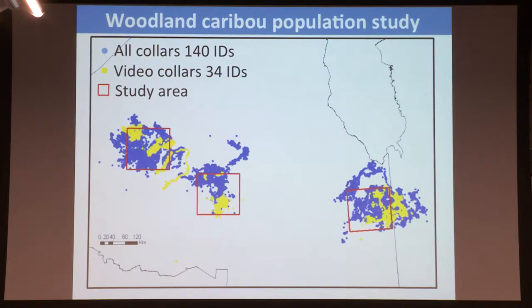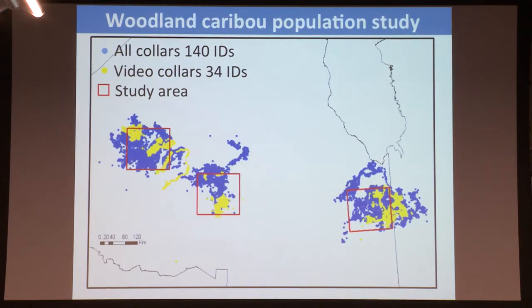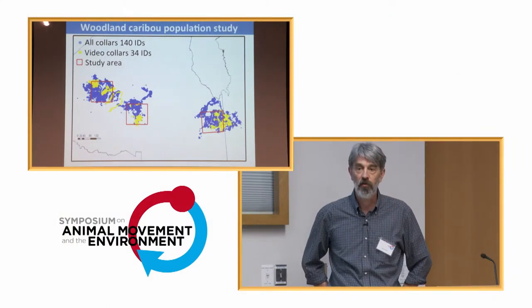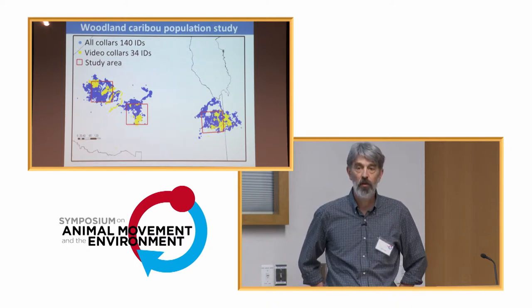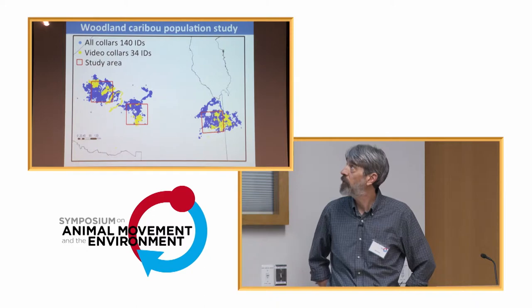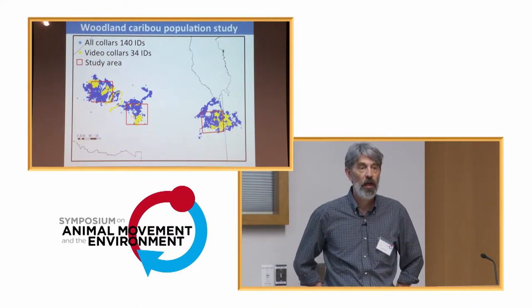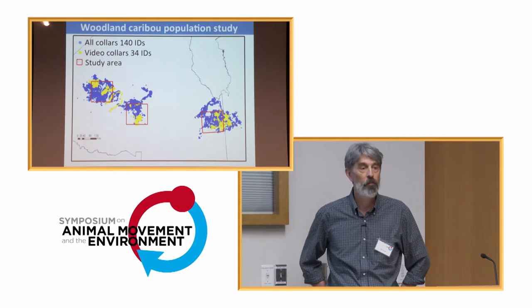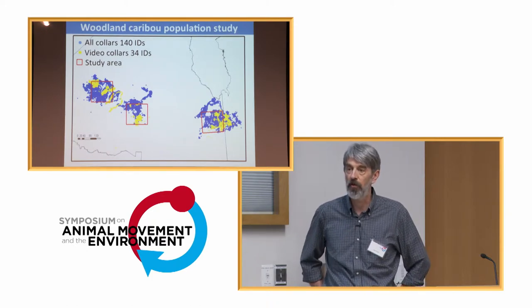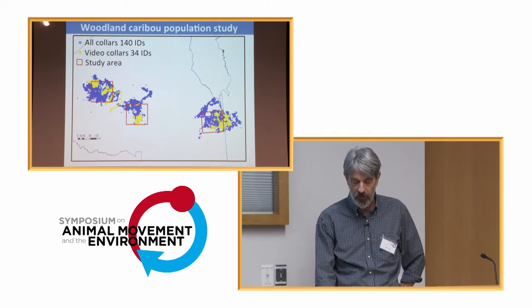That environment we would like to be able to modify to conserve caribou in the future. In order to address that problem, we have been working with individually marked animals — a very large number across the province, but animals in three detailed study sites. Each of these are about 25,000 to 30,000 square kilometers, so they're certainly not small study sites. We're trying to learn about the fitness attributes of individuals in those herds. Some fraction of the 140 animals we are working with have more detailed equipment added in the form of accelerometers and video cameras, and I'm going to talk about how we can use that information to augment our understanding and apply it against the larger population.